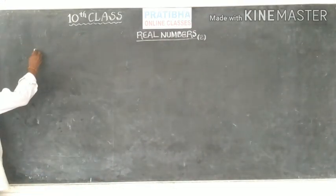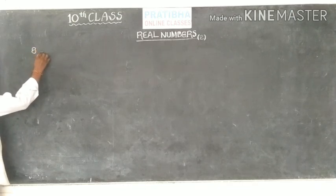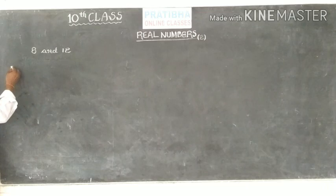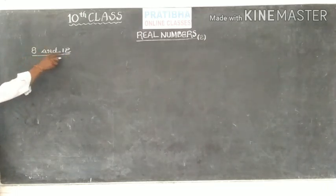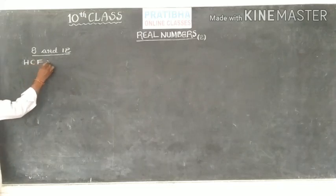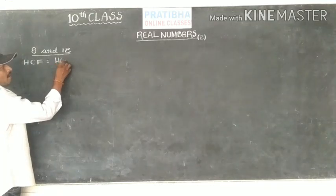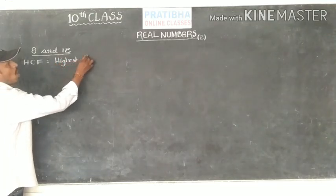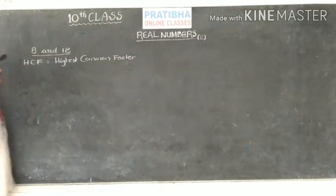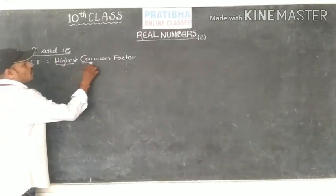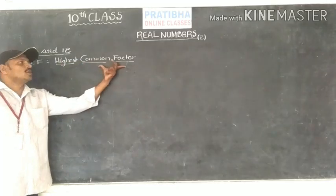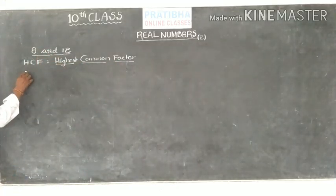If we take 8 and 12, let's find the HCF of 8 and 12. HCF stands for Highest Common Factor. So just observe these three words: Highest, Common, Factor. It means the highest factor among the common factors of these two numbers. So let's write the factors of 8.